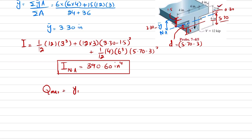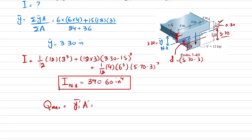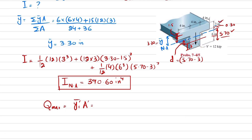Q_max = ȳ'·A for the area below the neutral axis. The total distance below the neutral axis in the web is 5.70 inches, the width is 4 inches, and the centroidal distance from the neutral axis is 5.70/2 = 2.85 inches. So Q_max = 2.85 × (5.70 × 4) = 64.98 in³.